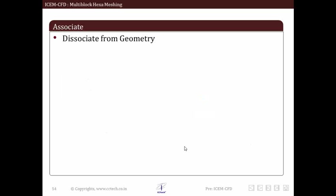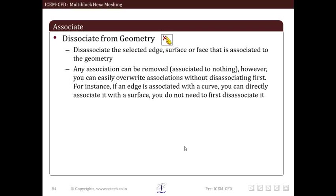The next option is dissociate from geometry. This option allows us to dissociate any blocking entities. Selection of different entities to be dissociated can be done individually or together. We can remove any association or easily override associations.